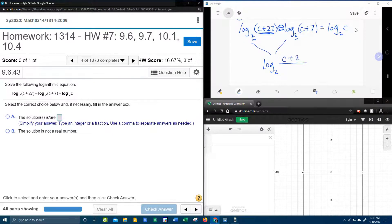So we can condense these two logs here. The two logs are going to become one, and this only works if the logs have the same base, which they do. And remember, whoever comes first is on top. So the c plus 27 is on top, the c plus 7 is on bottom, equals log base 2 of c.